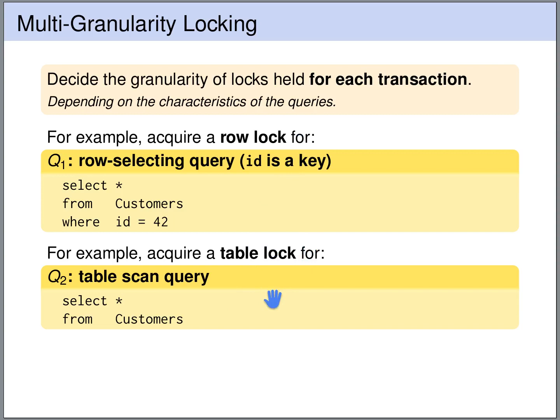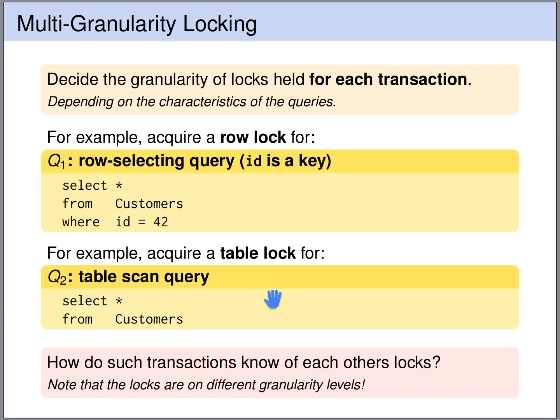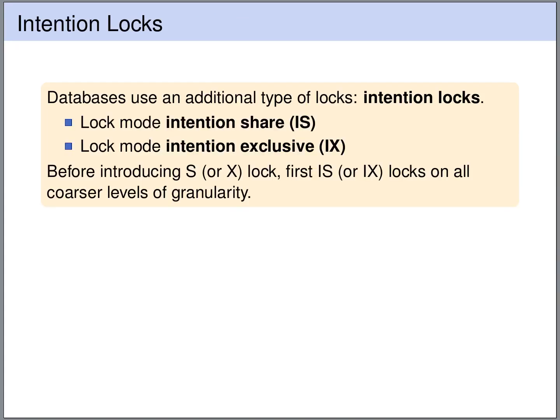The question is: how do these queries know of each other's locks? These locks are at different levels of granularity. In order to achieve that locks at different levels of granularity know of each other, databases use so-called intention locks.